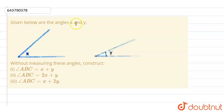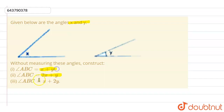We have been given angles x and y. Without measuring these angles, we need to construct: first, angle ABC equal to x plus y; second, angle ABC equal to 2x plus y; and third, angle ABC equal to x plus 2y.